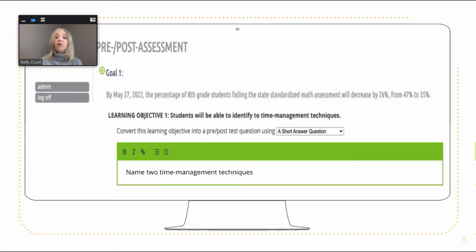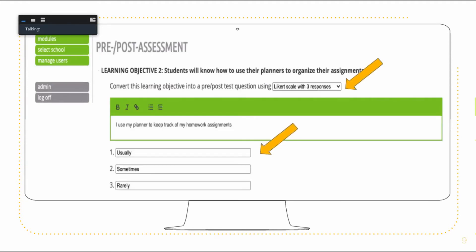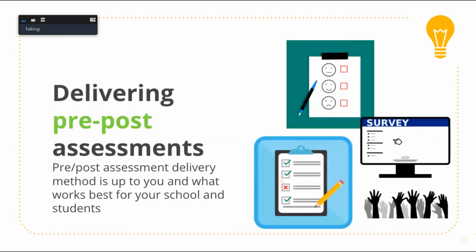You can write your questions as short answer questions, or using a Likert scale. You can select how many responses you would like to use for your scale from the drop-down menu and enter the response items you wish to use. You might use a tool such as Google Forms, MentiPole, Plickers, or any other digital or online tool that can be used for creating assessments, or you might use paper and pencil.